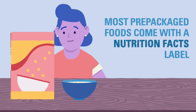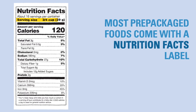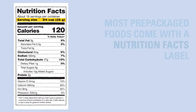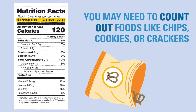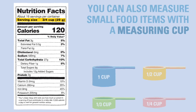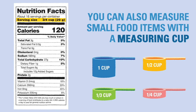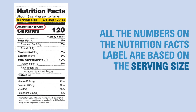Most prepackaged foods and ingredients come with a nutrition facts label that shows the serving size and other facts for the item. You may need to count out individual items like chips, cookies, or crackers, or measure an amount with a measuring cup to ensure the serving size is accurate. All the numbers on the nutrition facts label are based on the listed serving size, including the carb count.